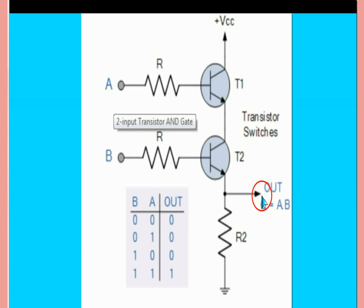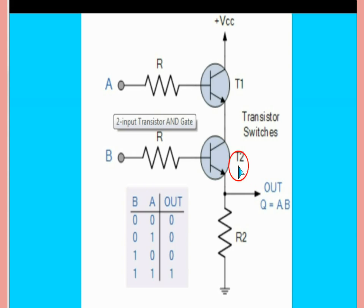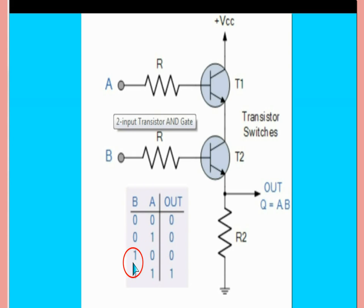If any transistor in the circuit is off, the line is broken and this point will be at the low potential. This is the logic — the transistor gives the same logic as the diode in the previous slide. A is 0, B is 0, output is 0; 0, 1 is 0; 1, 0 is 0; 1, 1 means 1.